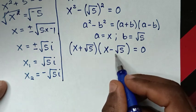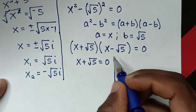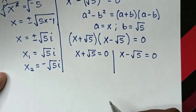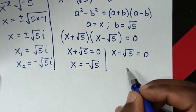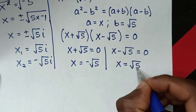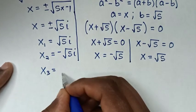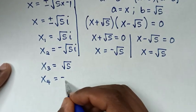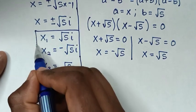From here we have two more solutions. The first is x + √5 = 0, giving x = -√5, and the second is x - √5 = 0, giving x = √5. Therefore x₃ = √5 and x₄ = -√5. These are all the values of x in this problem.